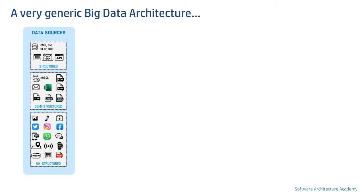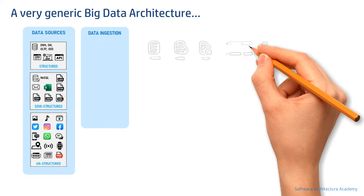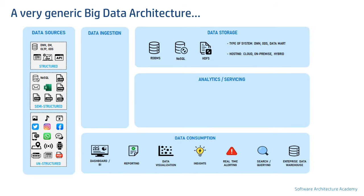Now that we have discussed sources, let's focus on the big data system side by covering the different layers. We will cover this in three parts: first layers, then components, and finally possible data flows. The layers in a big data architecture can be: ingestion layer, data storage layer, analytics layer (also known as servicing or service layer), data consumption layer, and finally big data governance layer. Please note there are multiple ways to build a big data system with or without all of these layers — this is a generic reference architecture focused on high-level learning.